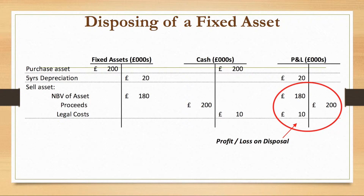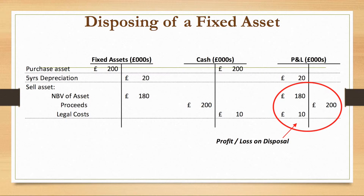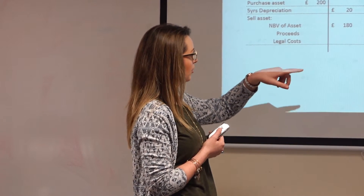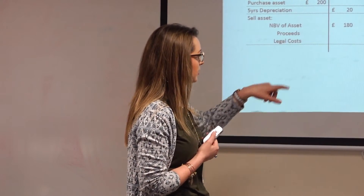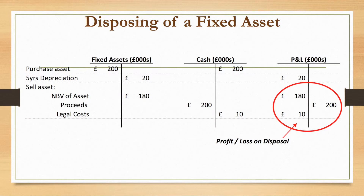When you are selling the asset you need to write it out of your books, so you credit your fixed asset. If we only have one fixed asset in our business, the fixed asset account would be closed and show a zero balance. Then in your cash: when you purchased the asset there was a cash outflow, but when you sell it for 200 grand that's an inflow of cash.